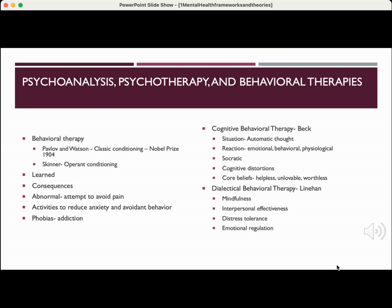An example of a cognitive distortion is black-or-white thinking, where a person thinks everything is good or everything is bad, or perhaps they focus on everything they do wrong and ignore everything they do right. The branches and leaves represent the situation — when a situation occurs, an individual has an automatic thought, and with that thought comes a feeling and a behavior. But if they can analyze the way they're thinking and change those cognitive distortions, they can change the way they feel and their behaviors, and eventually get down to those core beliefs where they no longer feel helpless, unlovable, or worthless.